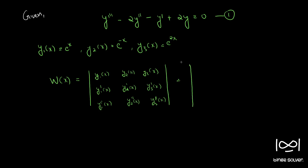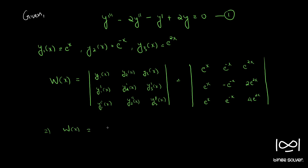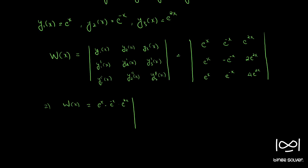So we check the Wronskian. The Wronskian W(x) is the determinant with first row: e^x, e^(-x), e^(2x); second row (first derivatives): e^x, -e^(-x), 2e^(2x); third row (second derivatives): e^x, e^(-x), 4e^(2x). We can factor e^x, e^(-x), and e^(2x) out from each respective column, leaving the matrix with rows [1, 1, 1], [1, -1, 2], [1, 1, 4].